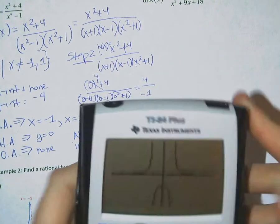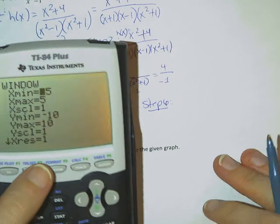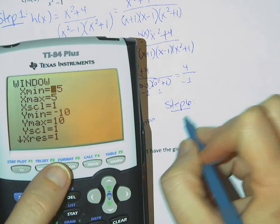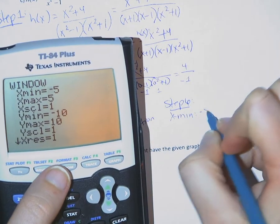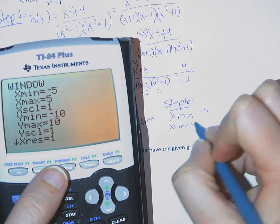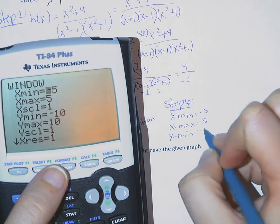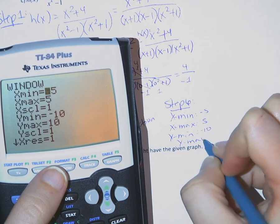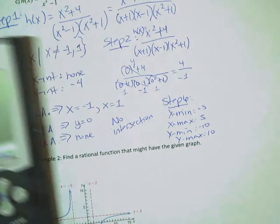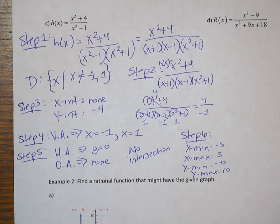Now what we have left is just to write down the window that we used. So the window we used, we had an x minimum of negative 5, an x maximum of 5, a y minimum of negative 10, and a y maximum of positive 10. Good.